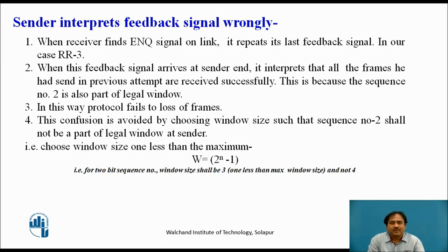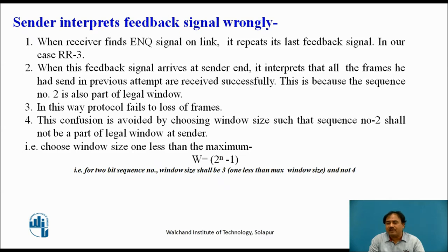So what is the solution? The confusion arises because sequence number 2 in the current transmission is covered by the feedback signal RR3 from the previous phase. We can use a modified window size defined as 2 raised to n minus 1, which ensures that frame number 2 will not be part of the legal window at the sender side. This problem can thereby be avoided.